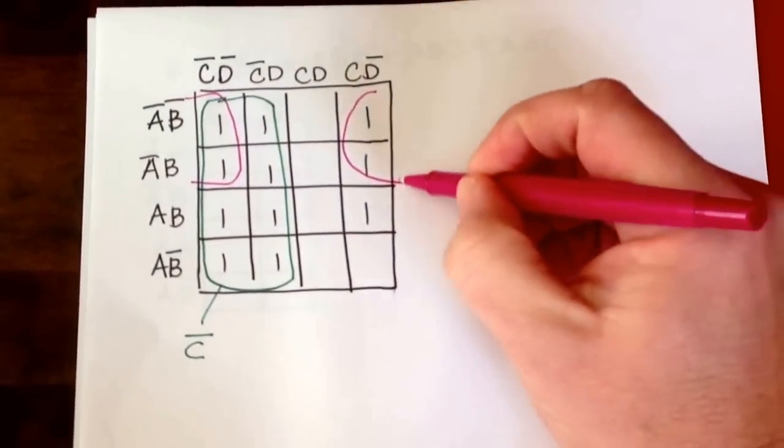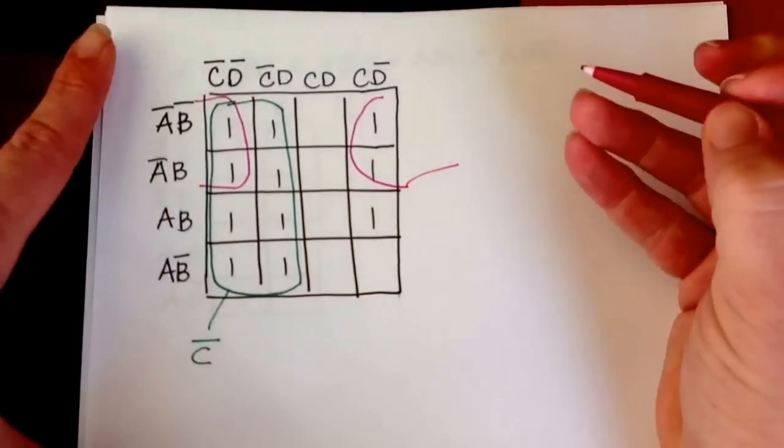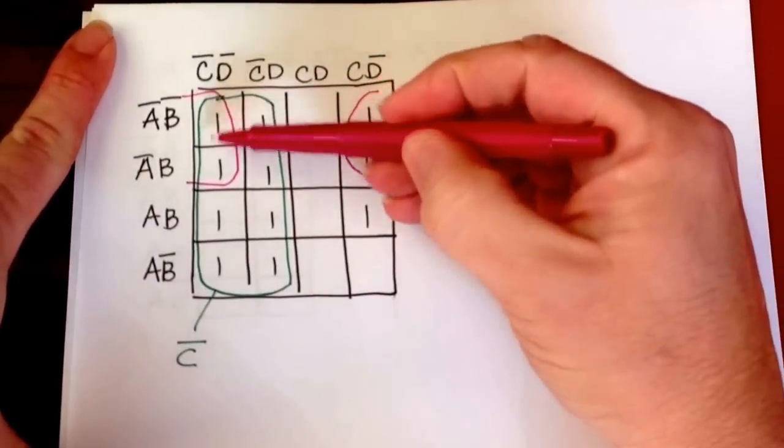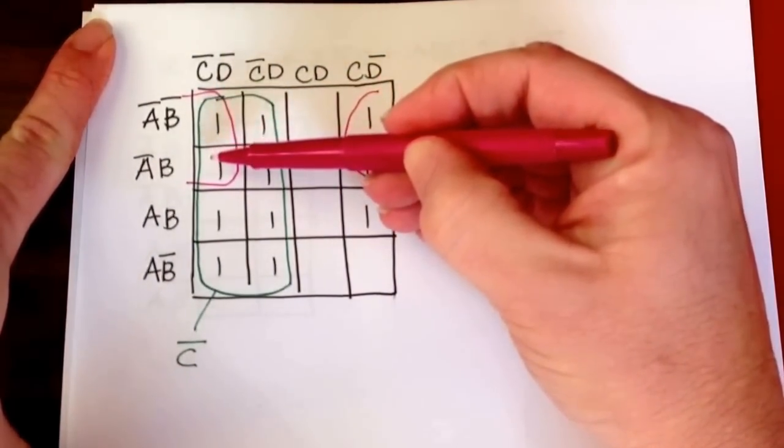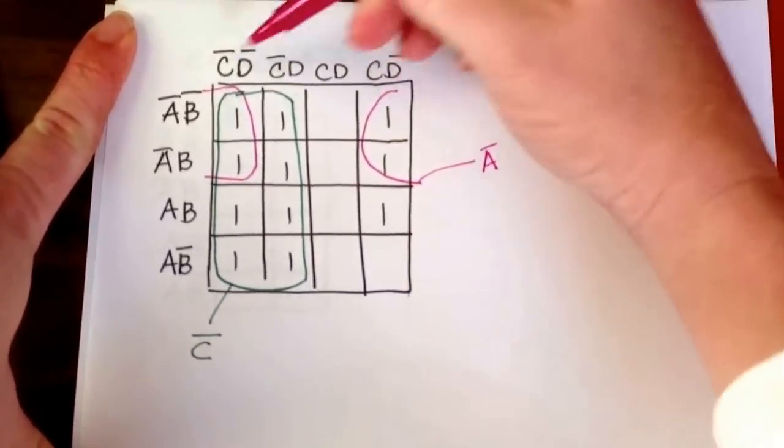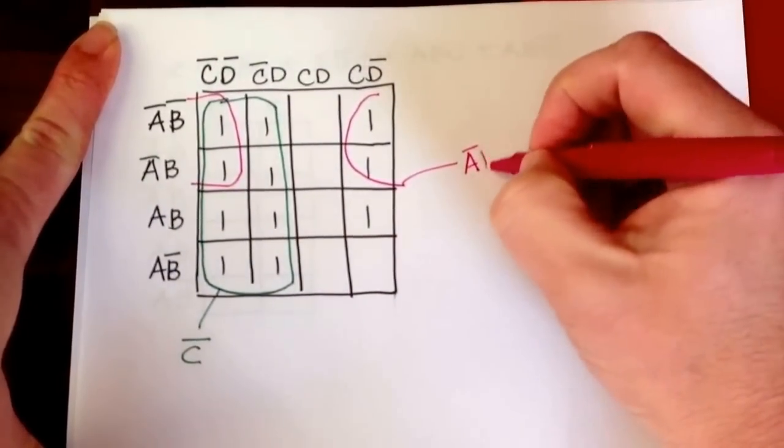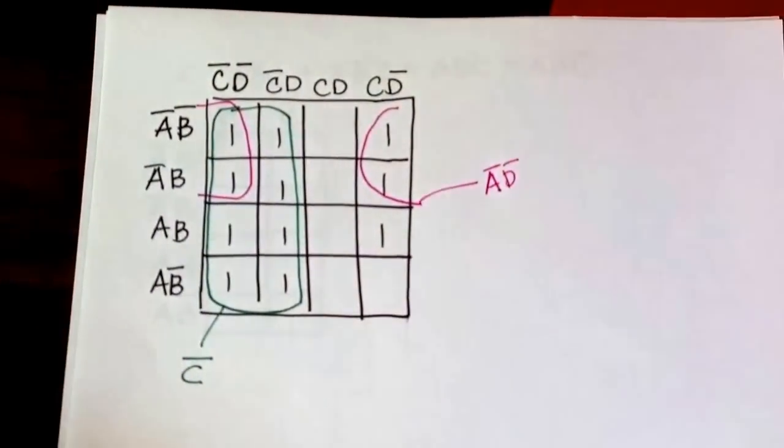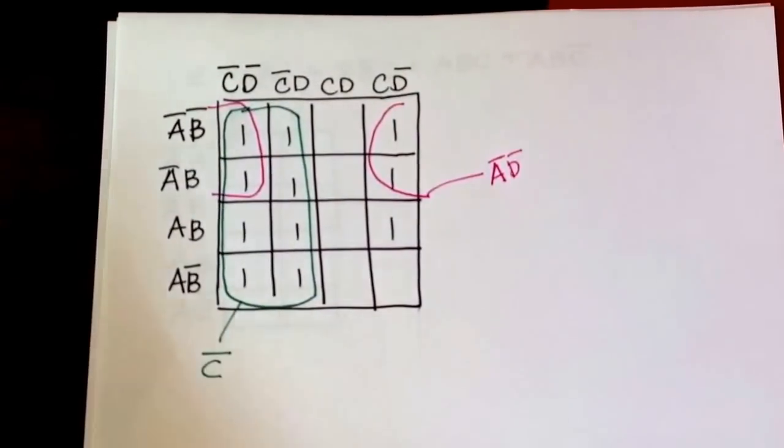From that group, the B changes, so I get not A, and from here to here the C changes, so I get not D.